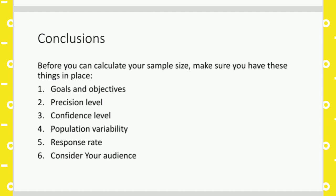Fourth, population variability — the variability in the population should be kept in mind before calculating the sample size. Fifth, response rate: the number of households will depend on the response rate. In a very backward area where people are unaware of the outside world, it is hard to find a proper response rate, so even a high number of samples may not yield accurate information. Finally, consider your audience — always keep in mind the audience you are going to interview.